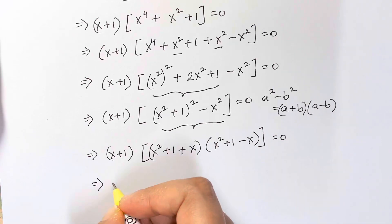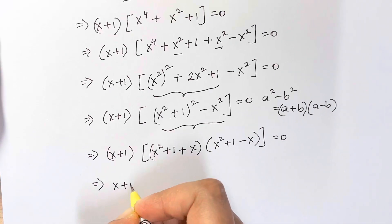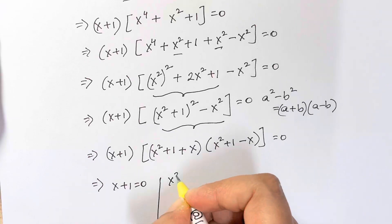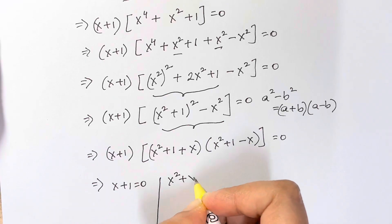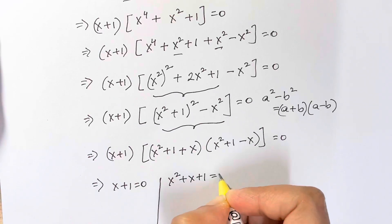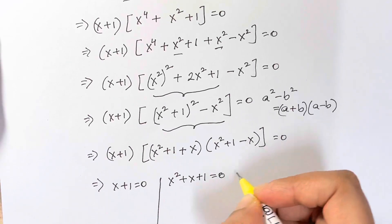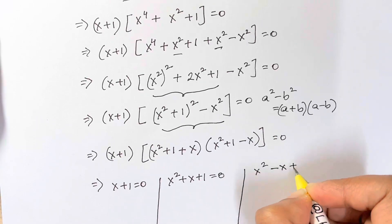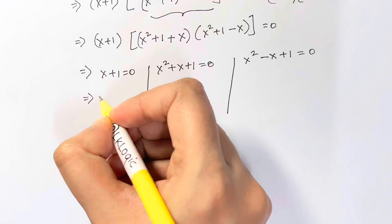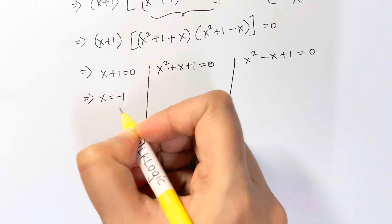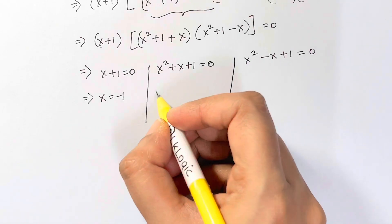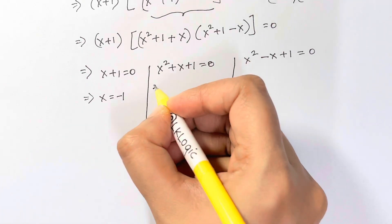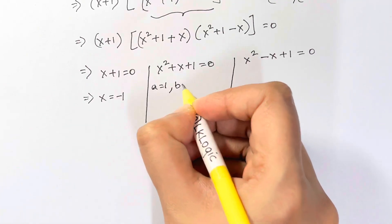Setting each factor to zero gives three equations: x+1 = 0, x²+x+1 = 0, and x²-x+1 = 0. From the first equation, x = -1. For the second equation, a = 1, b = 1, c = 1, so we apply the quadratic formula.